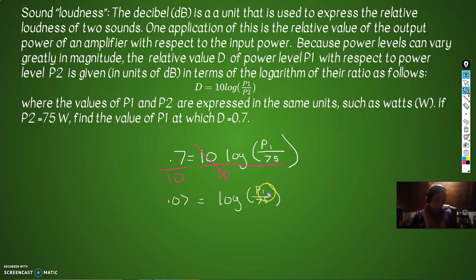How do I undo this log? I could exponentiate it. This is log base 10, so we use 10 to that power. We exponentiated both sides. These guys undo, so we just get P1 over 75 on the right. 10 to the 0.07 power is 1.17. Multiply both sides by 75 to get P1. When this guy gets multiplied by 75, we get 88.12 rounded. So we get 88.12, and that's me rounding off to two decimal places, and that will equal P1.